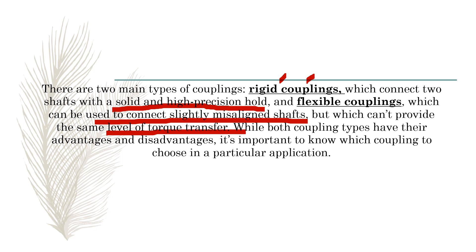In rigid coupling, the flange-to-flange connection means torque transfer is almost one hundred percent. But that cannot happen with flexible coupling. While both coupling types have their advantages, it is important to know which coupling to choose for a particular application — that is the key point.